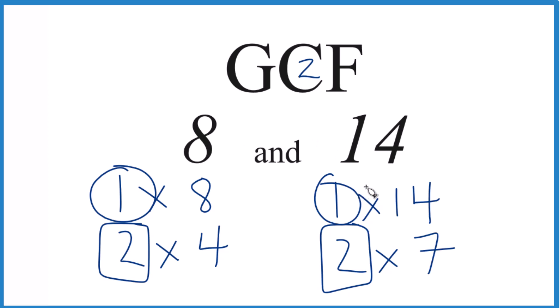And you could do this other ways, like prime factorization. But unless you have a really big number, this is pretty quick. This is Dr. B, finding the GCF for 8 and 14. The answer is 2. Thanks for watching.